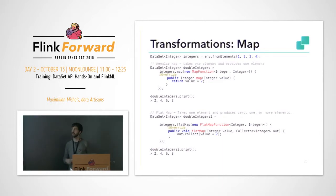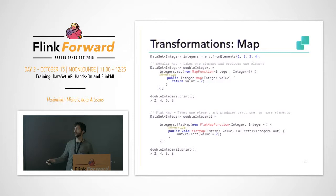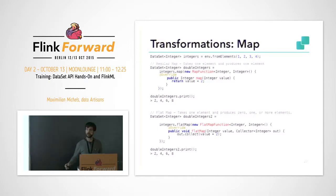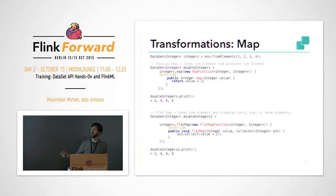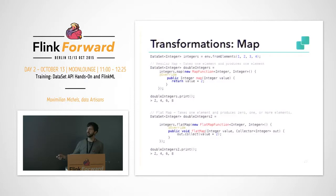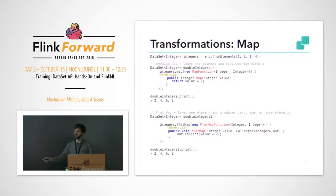We saw in the word count that we have the map operation, and there are actually two types of map transformation you can use: the map function or the flatMap function. The only difference is that the map function takes an input and produces exactly one output. For example, you get an integer and output an integer multiplied by two. So input one, two, three, four gives you two, four, six, eight as expected.